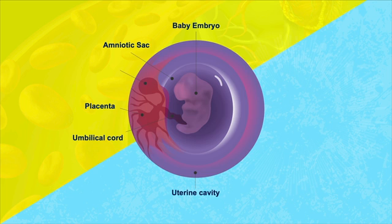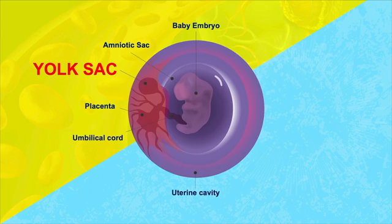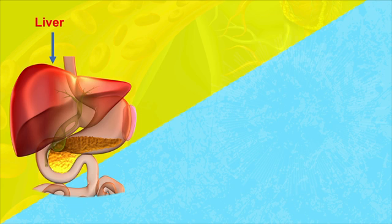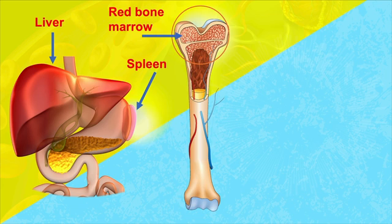First, let's talk about where blood cells are made. Before we're born, early in the embryo's development, there's a structure called a yolk sac. It helps to nourish the embryo, but it's also one of the early sites of hemopoiesis. As the embryo develops, hemopoiesis starts happening in other structures like the liver, the spleen, and eventually the red bone marrow. By the time a child becomes an adult, most of the hemopoiesis actually happens in the red bone marrow.